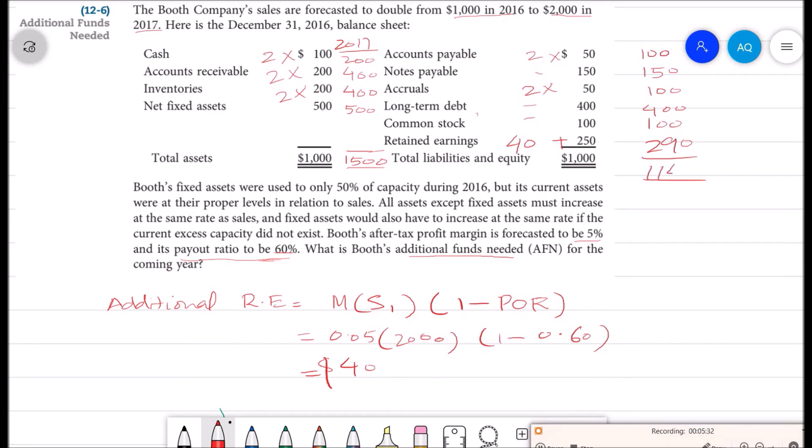Total will be $1,140. So to balance this thing, we would require more funds. Additional funds needed will be the difference of these two, and that is $360. These $360 will be raised either through common stock or debt, but it's up to the firm's policy.